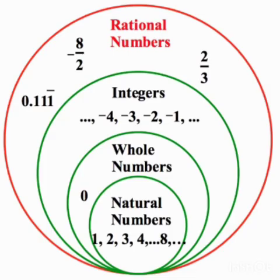Next, you should know the properties. You can take page number 3 and refer the properties of Rational Numbers. What are the properties that Rational Numbers satisfies? That you should learn. Rational Numbers are closed under addition, closed under subtraction, closed under multiplication. Rational Numbers are not closed under division.